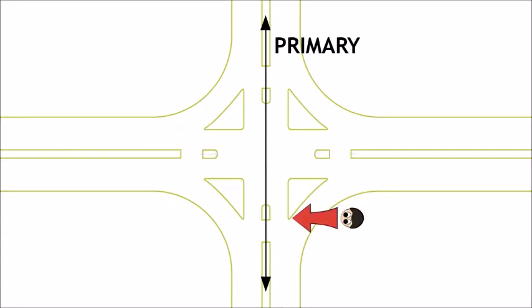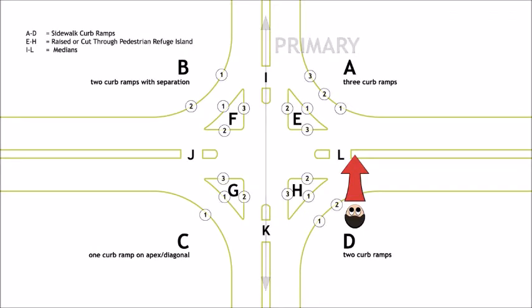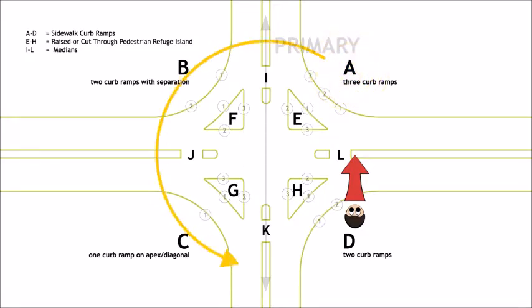To note the intersection position, orient yourself so you are facing the primary highway and then rotate 90 degrees so you are facing toward increasing mile points. Refer to the curb ramp designation diagram and assign each curb ramp the corresponding letter and number, where A is the top right corner of the intersection and the labels continue counterclockwise.